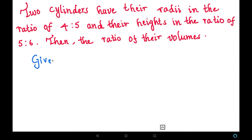Given that, let us take the first cylinder as R1 and second cylinder as 2. So R1 is 4, R2 is 5, and then H1 is 5 and H2 is 6. And here we have to find volume 1 is to volume 2.